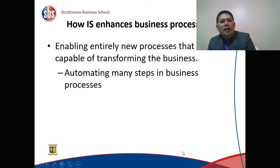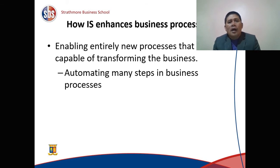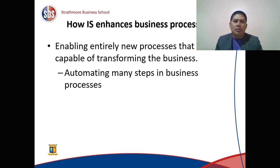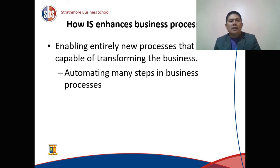Information systems can also enable an entirely new process capable of transforming the business by automating many steps. One of those transformations is the flattening of the organizational structure. It used to be very hierarchical with many layers of management, but because of business information systems, we eliminate some of those levels, enabling entirely new processes that transform the business.